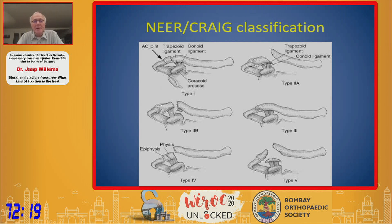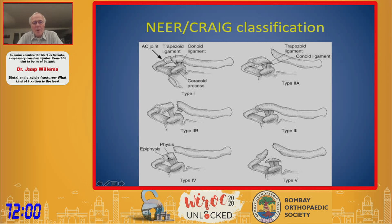You see type 1; type 2A is medial to the ligaments; type 2B is in between the ligaments; type 3 is an intra-articular fracture. It is a slightly wrong picture because it is not where the epiphysis is — the epiphysis is more lateral. When it is epiphysiolysis it is type 4, and type 5 is where a fragment is still attached to the ligaments and the two other fragments are displaced.